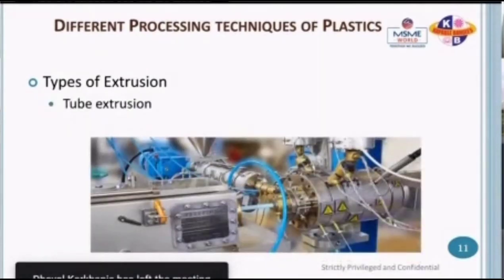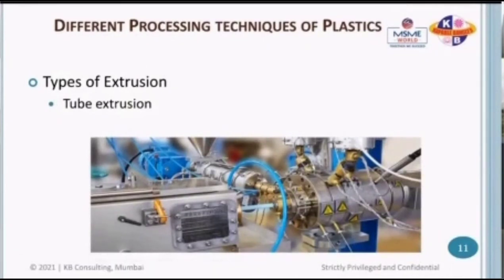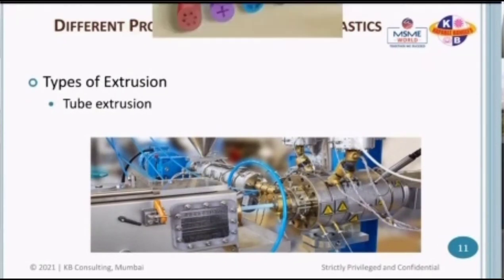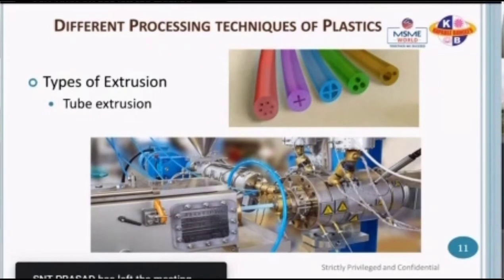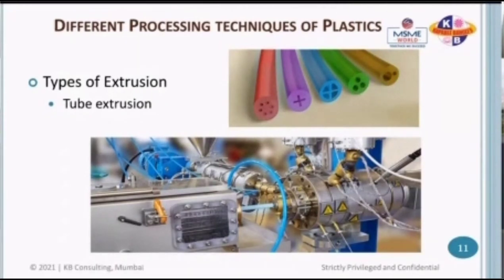Next we look at tube extrusion. There is a die extruding the tubing, which then goes into a trough with water — the extruded tubing comes out and is cooled in a water bath. Different kinds of tubings are produced, and the majority are used in industrial and medical applications. The first example has two holes inside — a two-lumen tubing — typically used for medical devices or industrial applications where you want to transfer two mediums through the same tubing. We also have a three-lumen tubing, four-lumen tubing, a plus-profile, and a six-lumen tubing.